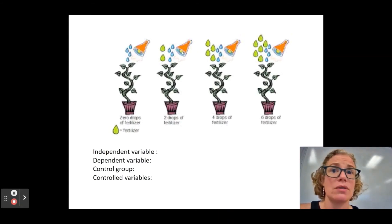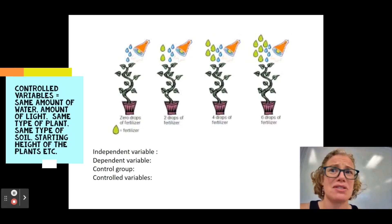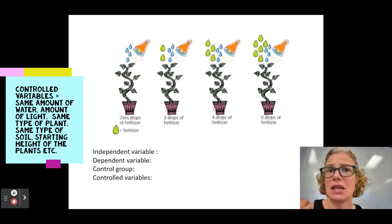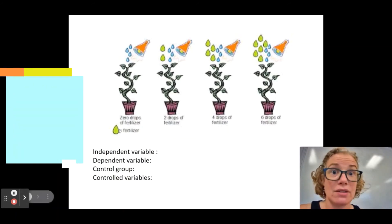the amount of water they're receiving is the same, the amount of light they're receiving is the same. It should be a big, long list. It should be the same starting height, ideally, same type of plant. We want to try to make everything we possibly can the same, except for the fertilizer.